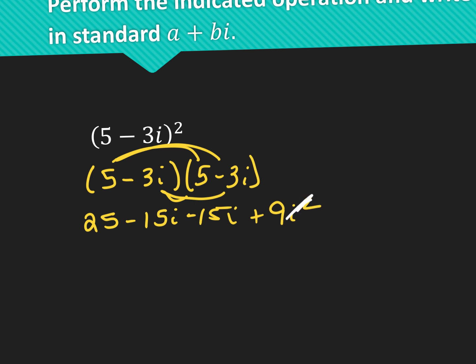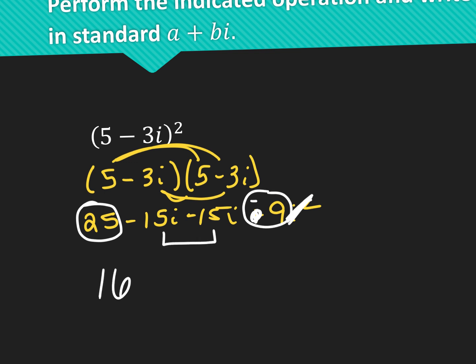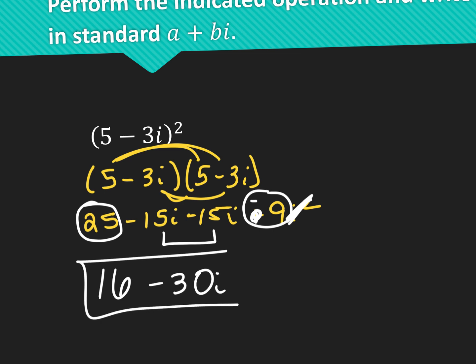And negative 3i times negative 3i is positive 9i squared. As soon as we see that i squared, we cross it off and change the sign in front. So 25 minus 9 is going to give me 16. And negative 15i plus negative 15i is going to give me negative 30i. And there you go.